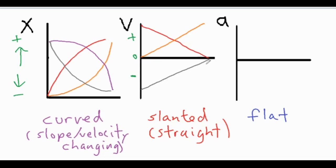Remember, negative just means direction. So if it goes from negative five to negative four to negative three to negative two to negative one, that means it's going slower and slower — moving towards the x-axis or towards zero means it's slowing down. For our purple one, if it's negative and speeding up, it's going to start at zero and slant away from the x-axis to show that the negative value is increasing. So the purple is speeding up, the gray is slowing down, the orange is speeding up, and the red is slowing down.